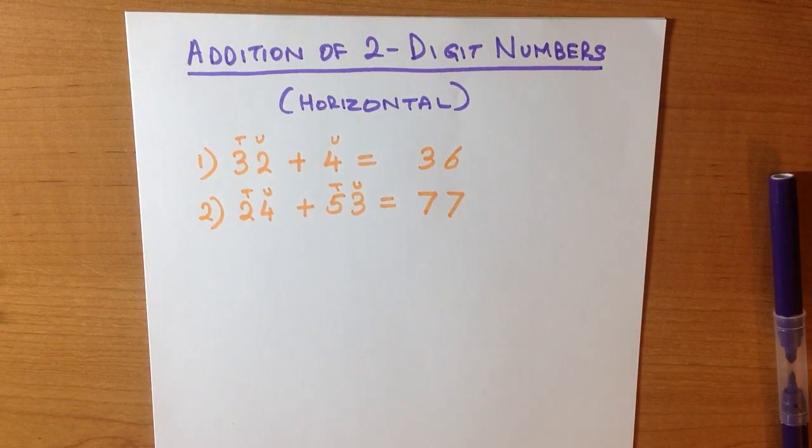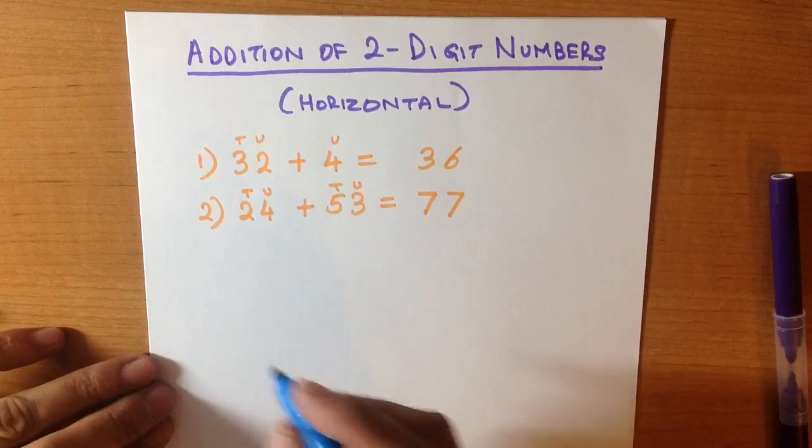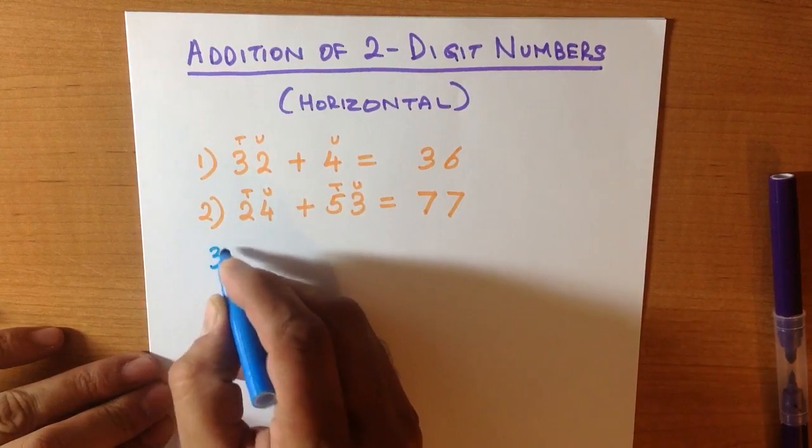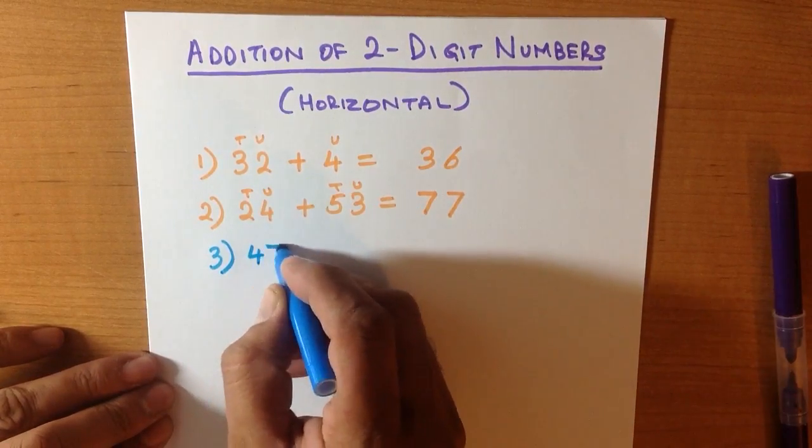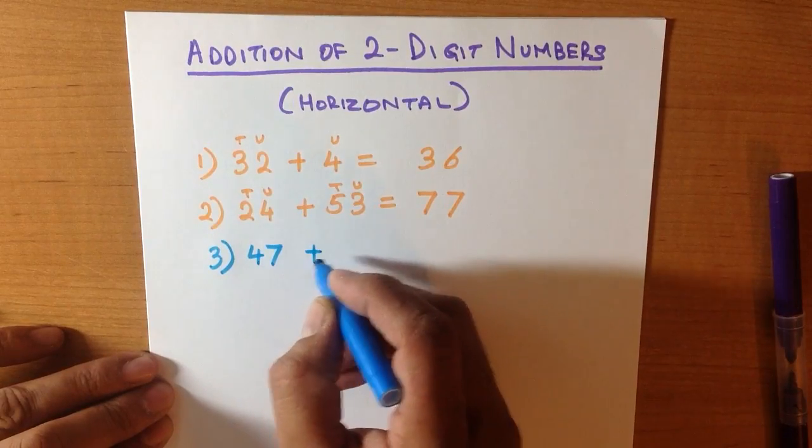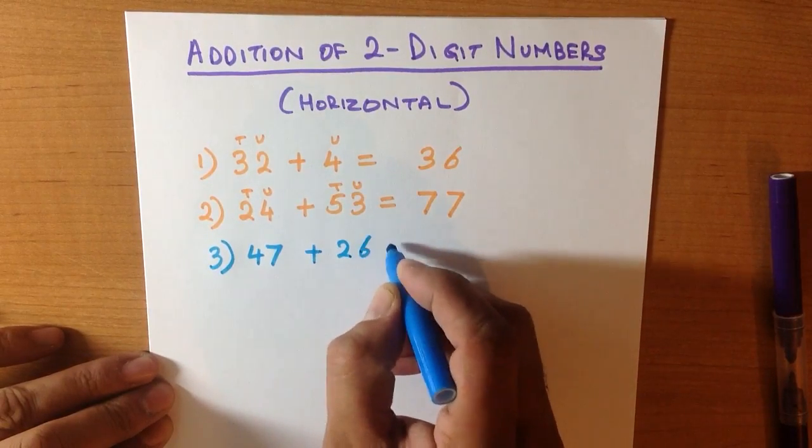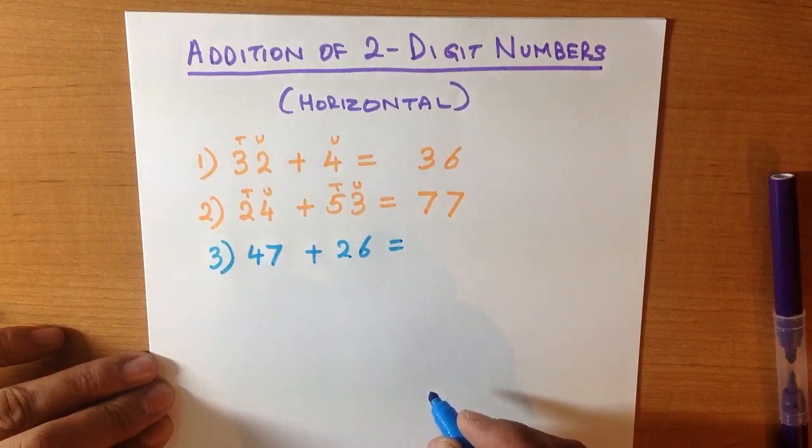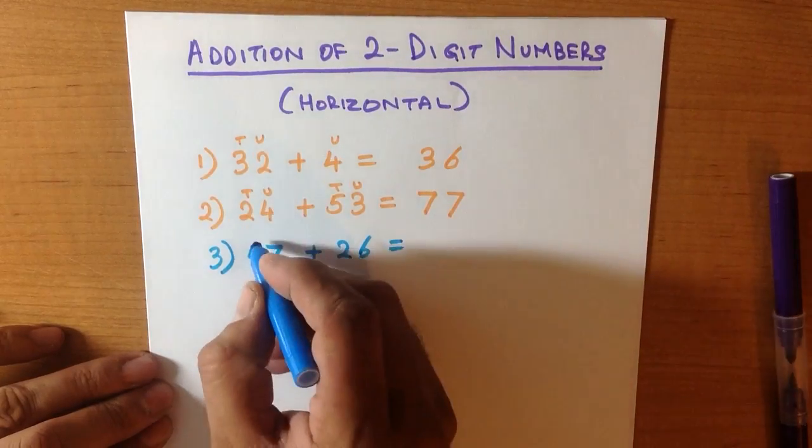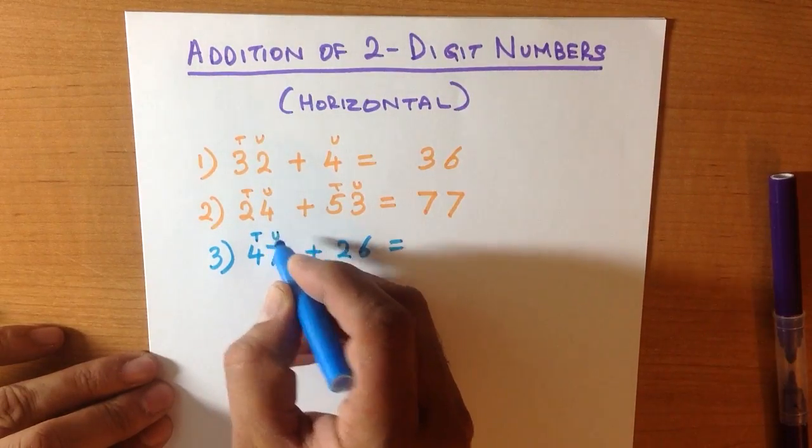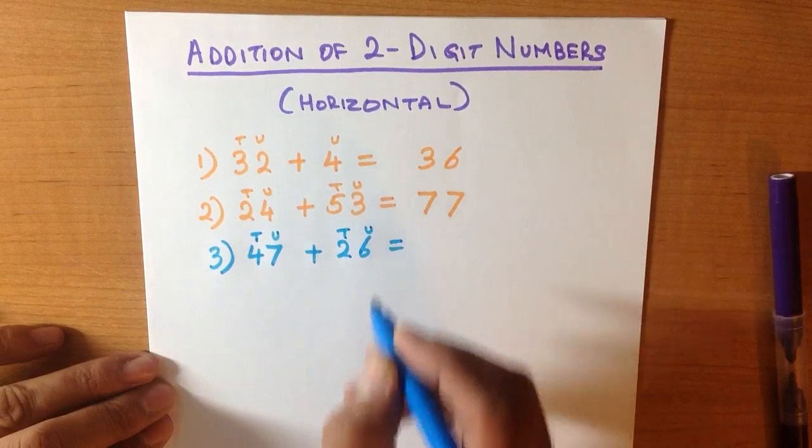Now what if the units add to 10 or more? Let's change colors for this. What is 47 plus 26? Now we can label this again: tens, units, tens, units.